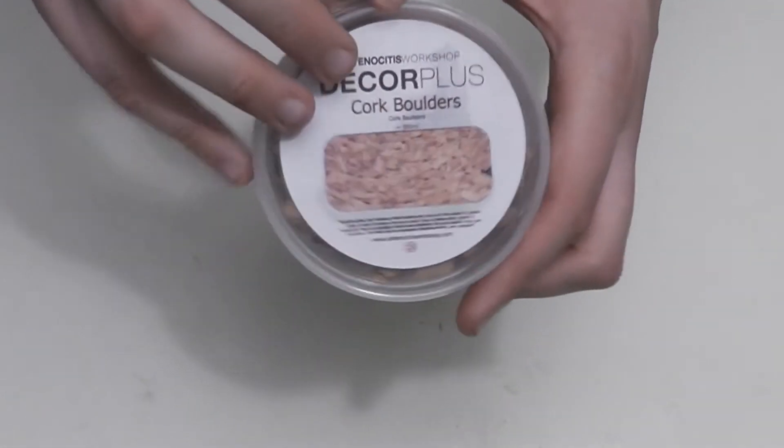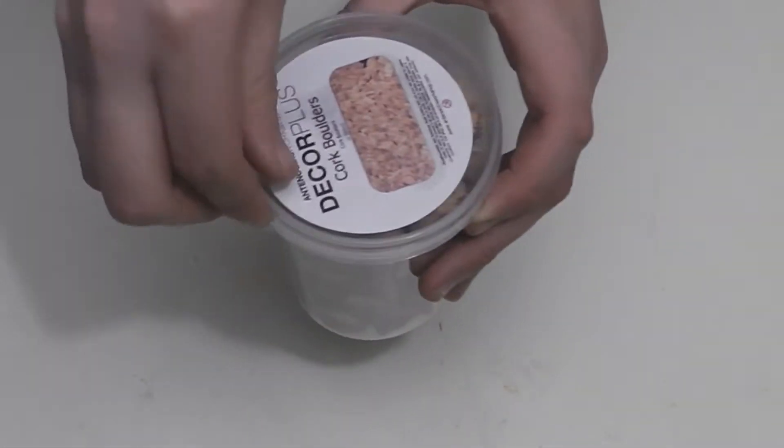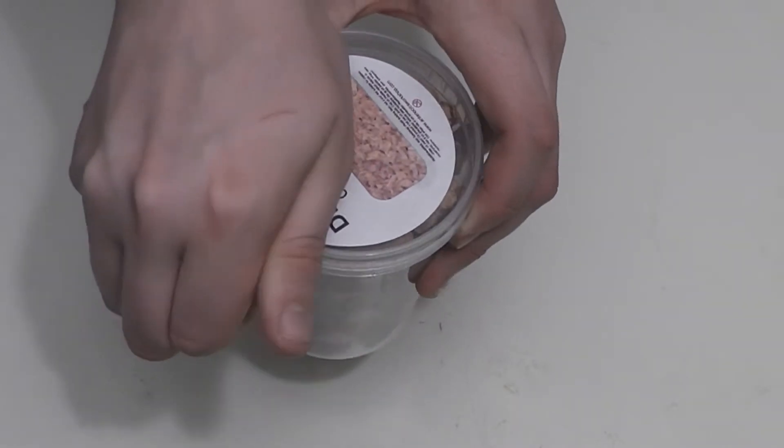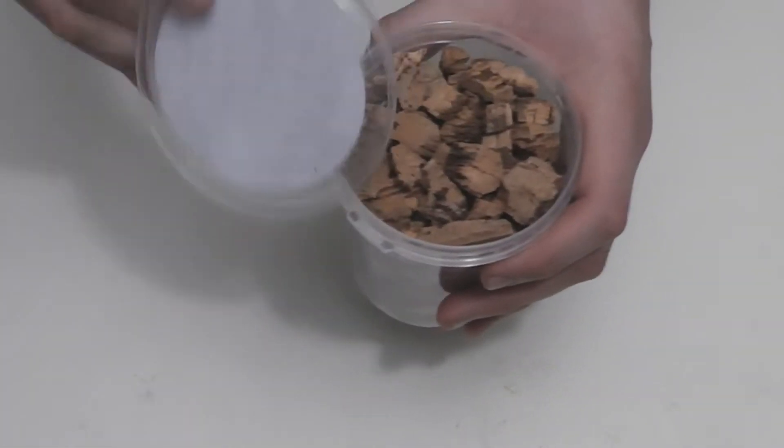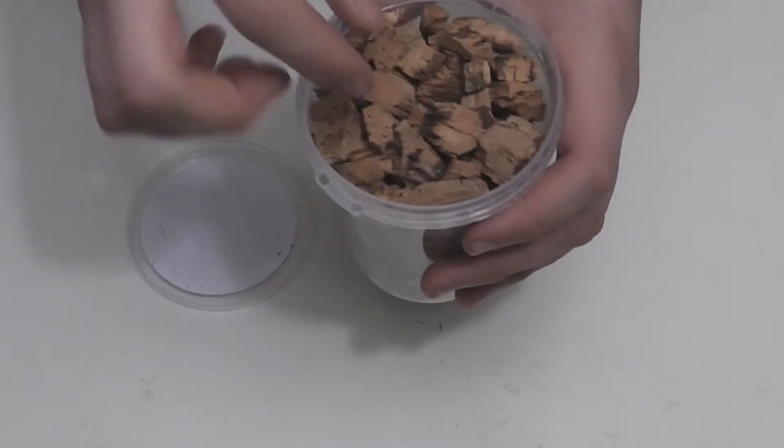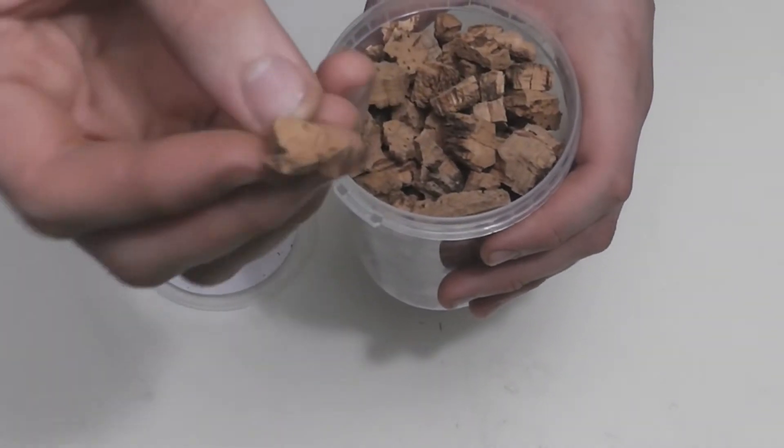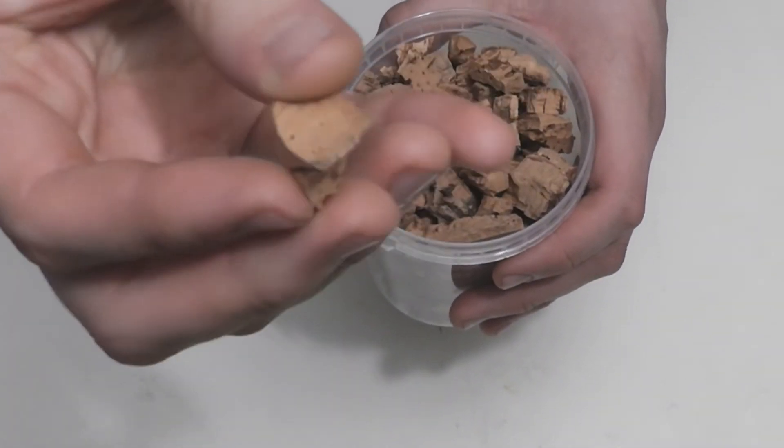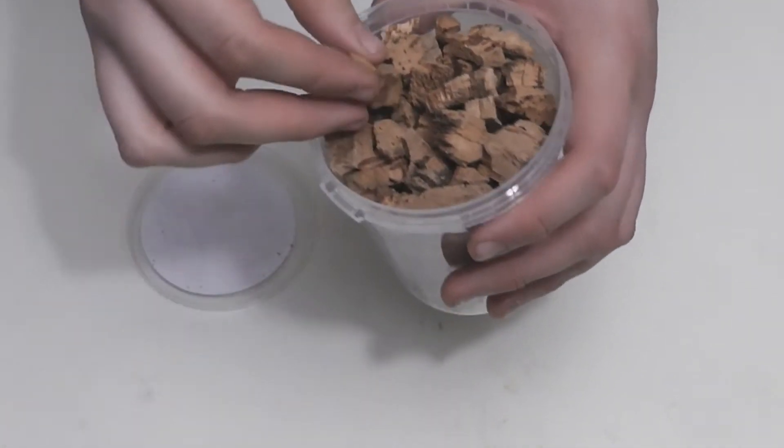I will now go ahead and open the tub so we can get a closer look at these cool cork boulders. Cork is quite often used to create bottle stoppers. You can see from the shape of this piece that these are the offcuts you would get when making the stoppers.